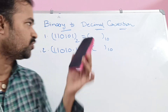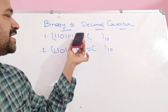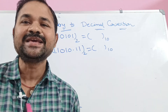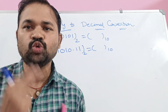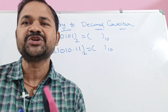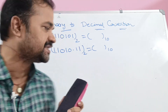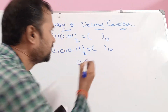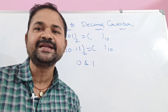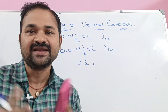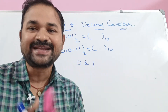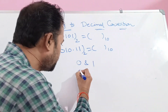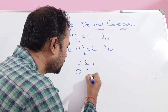Now let us discuss binary to decimal conversion. Binary means 2 — it is a combination of 2 symbols: 0 and 1. Whereas decimal means 10 — it is a combination of symbols from 0 to 9.